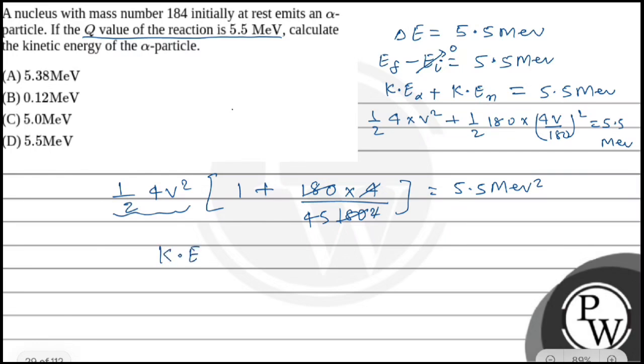So KE_alpha × (1 + 1/45) = 5.5 MeV, which gives KE_alpha = 5.5 × 45/46 MeV. Solving this, KE_alpha = 5.3804 MeV, which we can write approximately as 5.38 MeV.